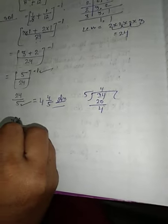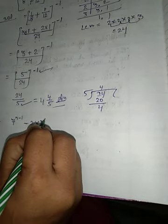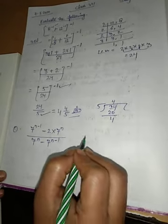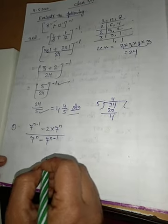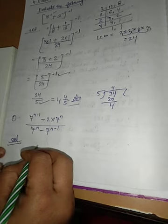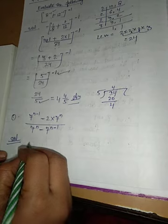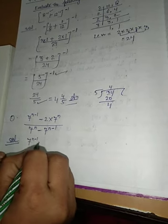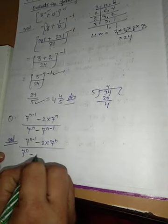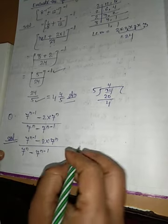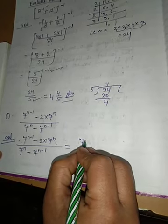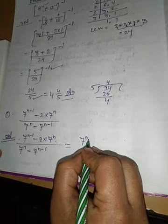So we have: 7^(n−1) − 2 × 7^n, all divided by 7^(n+1) − 7^(n−1). How can we find the value? Let us solve it. We have to write the question again in the answer. Here we have 7ⁿ common, so we have to take 7ⁿ out as the common factor.